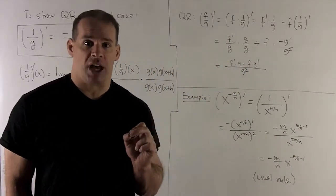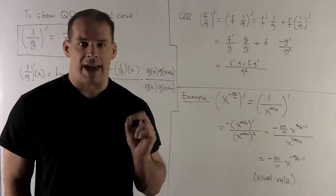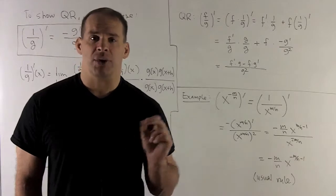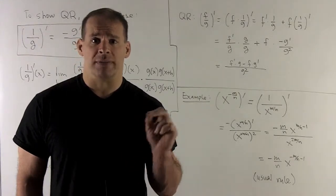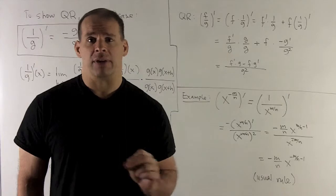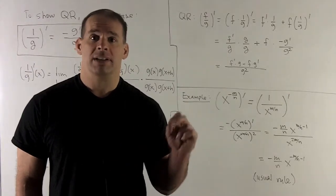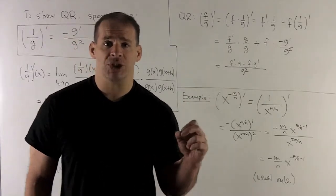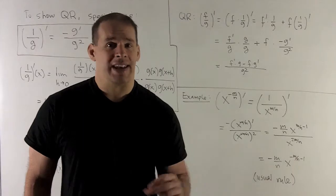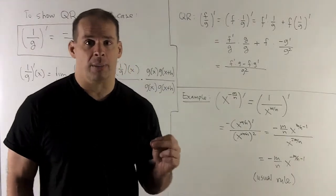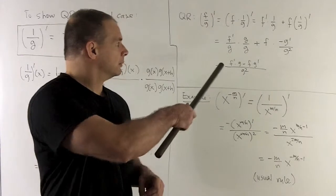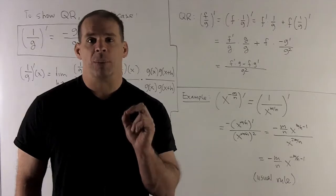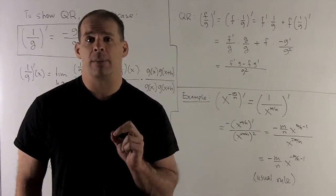Once you have the special case, finishing the general quotient rule is just the product rule. Write (f/g)' as (f · 1/g)'. Taking the derivative of each factor: f prime times (1/g), plus f times (1/g)'. We just showed (1/g)' = -g prime / g squared. Collecting terms gives the full quotient rule: (f'g - fg') / g².